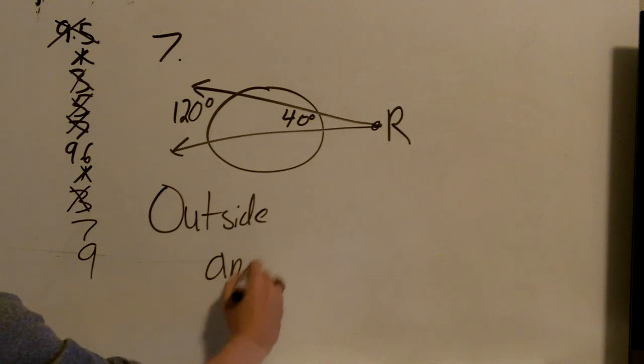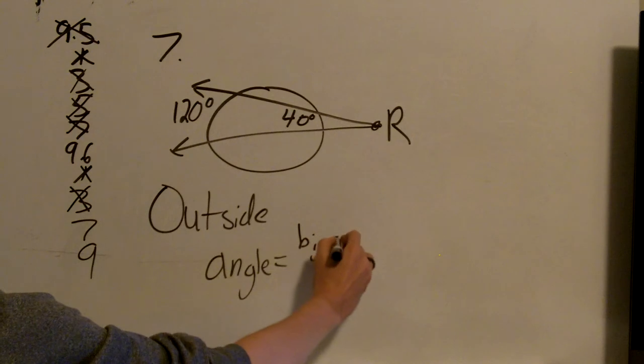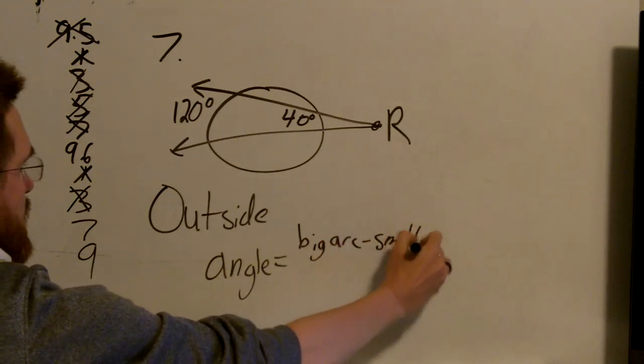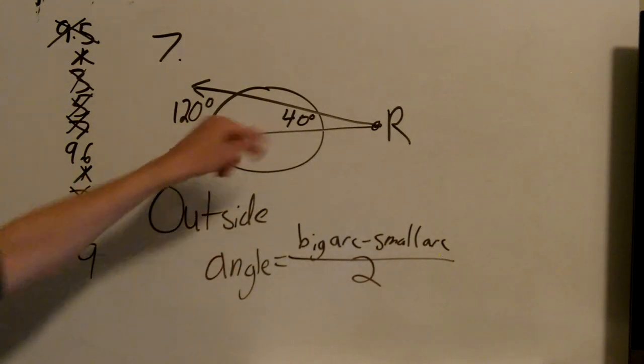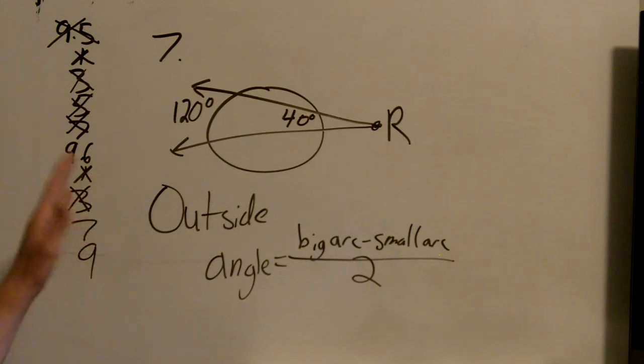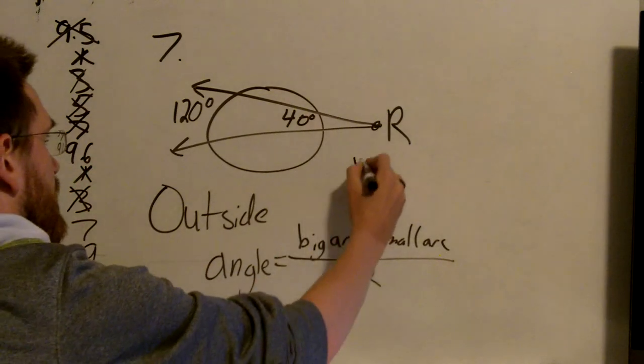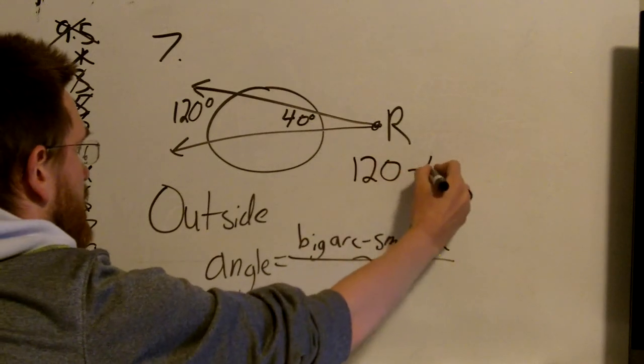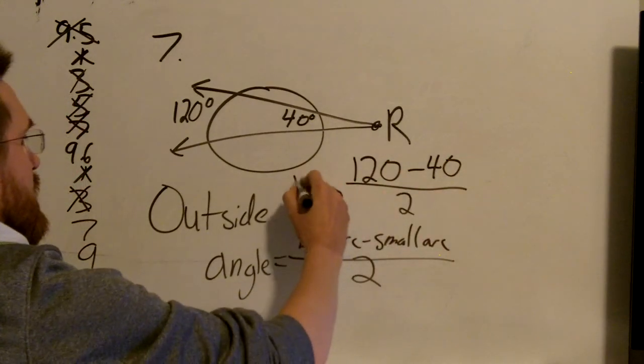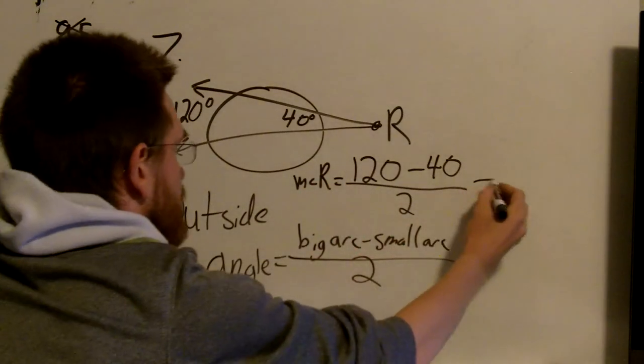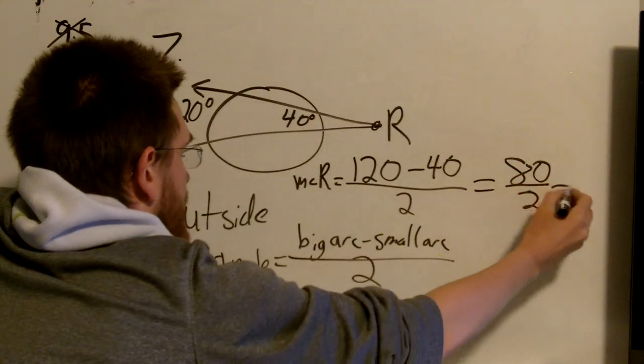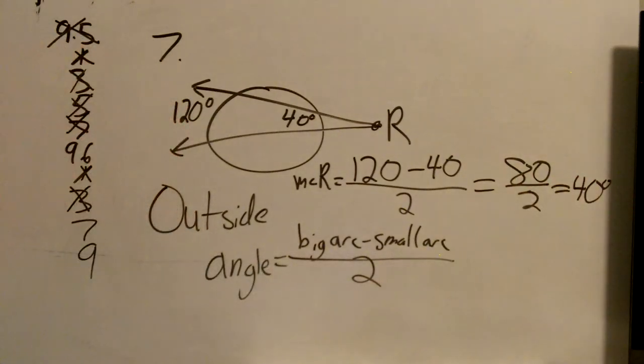Outside, we say angle equals big arc minus small arc divided by 2. So ask yourself, which number is bigger, 120 or 40? 120 is bigger. So we get 120 minus 40 divided by 2 equals the measure of angle R. So 120 minus 40 is 80. Divide that by 2, we get 40 degrees. So angle R equals 40 degrees.